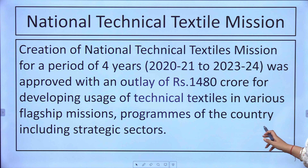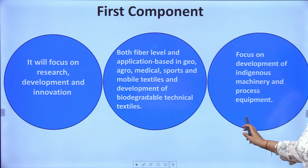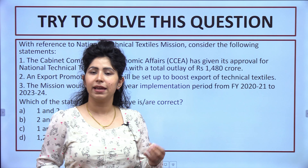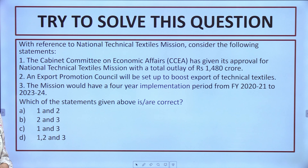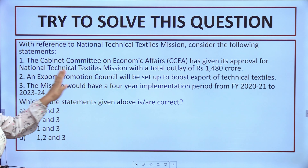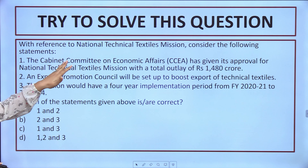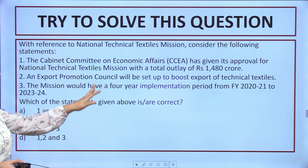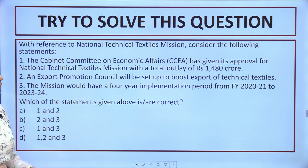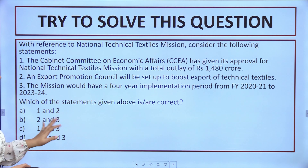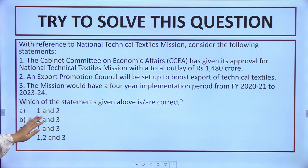The National Mission on Technical Textiles discussed here is very important for all three exam levels — prelims, mains, and interview. Now let us solve an MCQ: With reference to the National Technical Textiles Mission, consider the following statements: (1) The Cabinet Committee on Economic Affairs gave its approval with an outlay of rupees 1480 crore — correct. (2) An export promotion council will be set up to boost export of technical textiles — correct. (3) The mission has a 4-year implementation period from FY 2020-21 to 2023-24 — correct. All three statements are correct; the answer is D.